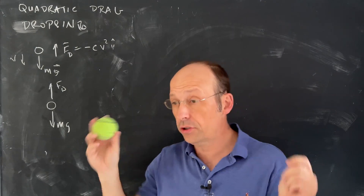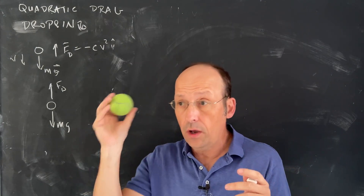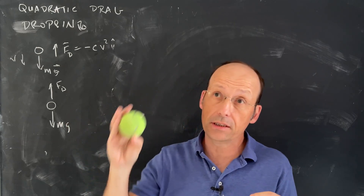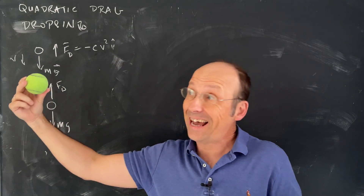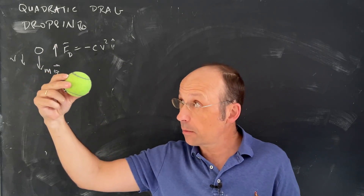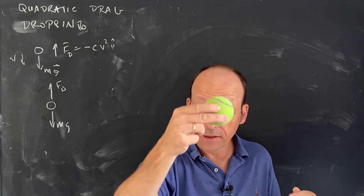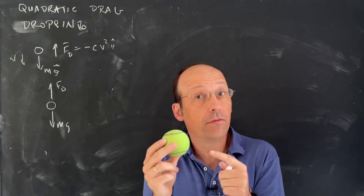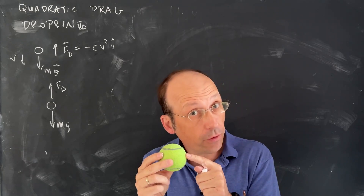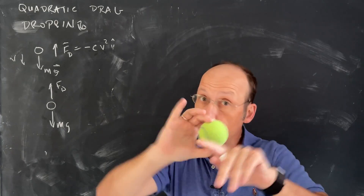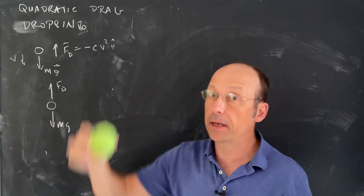Quadratic drag. I've done a bunch of velocity-dependent forces. In the last video I looked at the motion of an object moving horizontally with a drag force that was proportional to velocity squared, and there was no gravity. But now we want to do dropping with gravity.